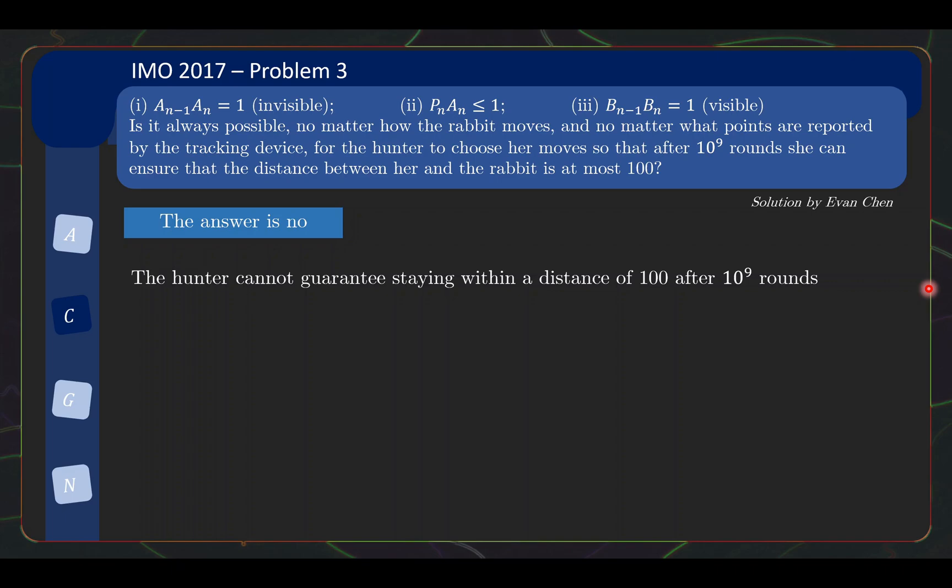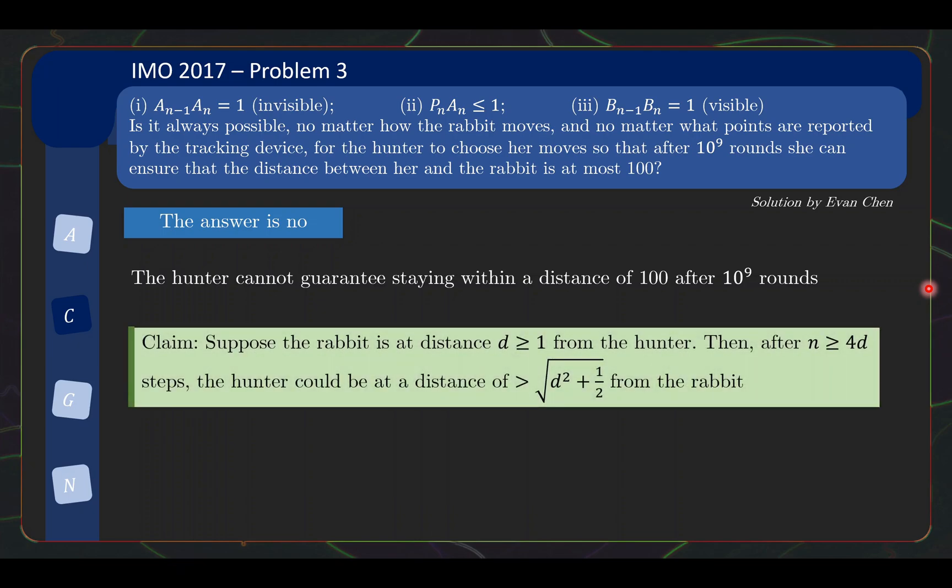So how might we prove something like this? Well, one logical approach is to say, is there a scenario where the distance increases slightly from the current distance and the distance increased incrementally? So specifically, the distance right now might be a certain D and then maybe there's one scenario where after a certain number of rounds, the distance ends up increasing between the hunter and the rabbit. So specifically, we are going to prove the following claim. Suppose the rabbit is at distance D greater than equal to one from the hunter. Then, no matter what strategy the hunter has, there's always at least one scenario where after n steps, I'm going to let n bigger than equal to 4D here, you'll see why later. So after n steps, the hunter could be at a distance of bigger than square root d squared plus half from the rabbit.